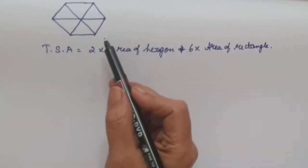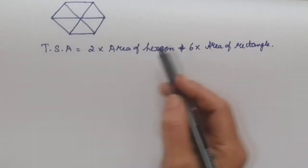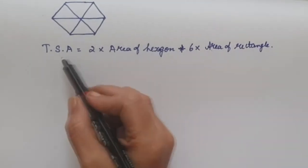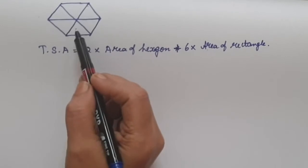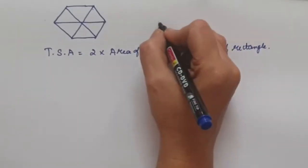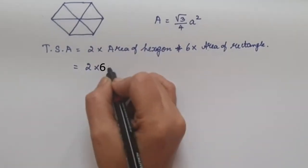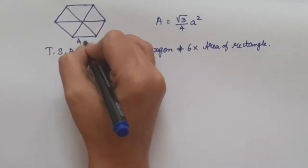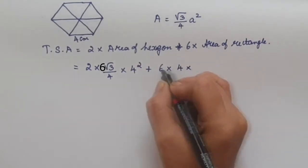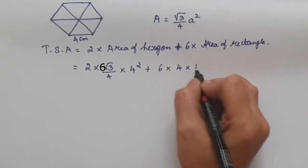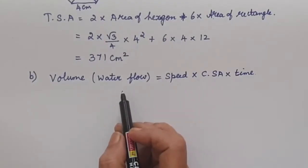This figure has 2 hexagons and 6 rectangles. To find the total surface area, we find the area of the hexagon multiplied by 2, plus the area of a rectangle multiplied by 6. To find the area of the hexagon, we divide it into 6 equilateral triangles. The area of an equilateral triangle is (√3/4)a², where a is the side. So: 2 × (√3/4) × 4² + 6 × (4 × 12). When we simplify, we get 371 cm².